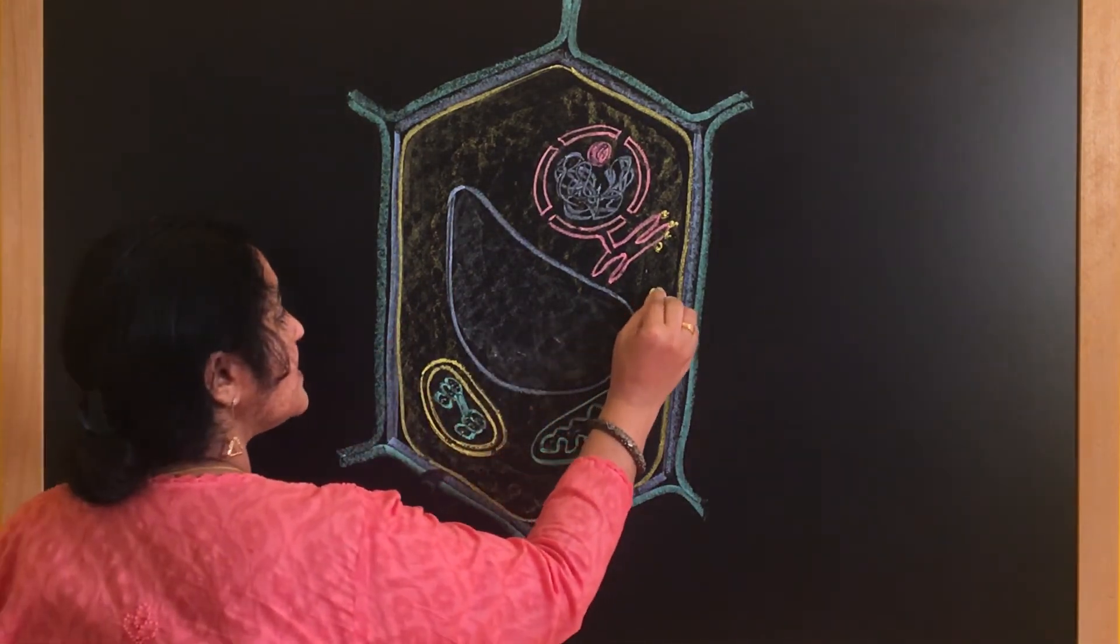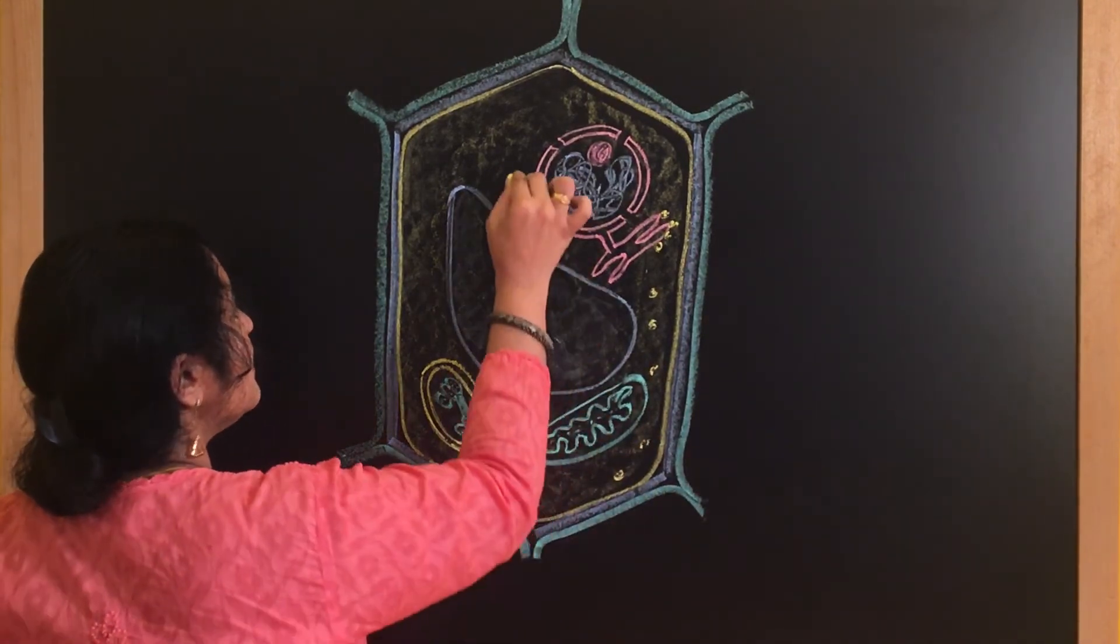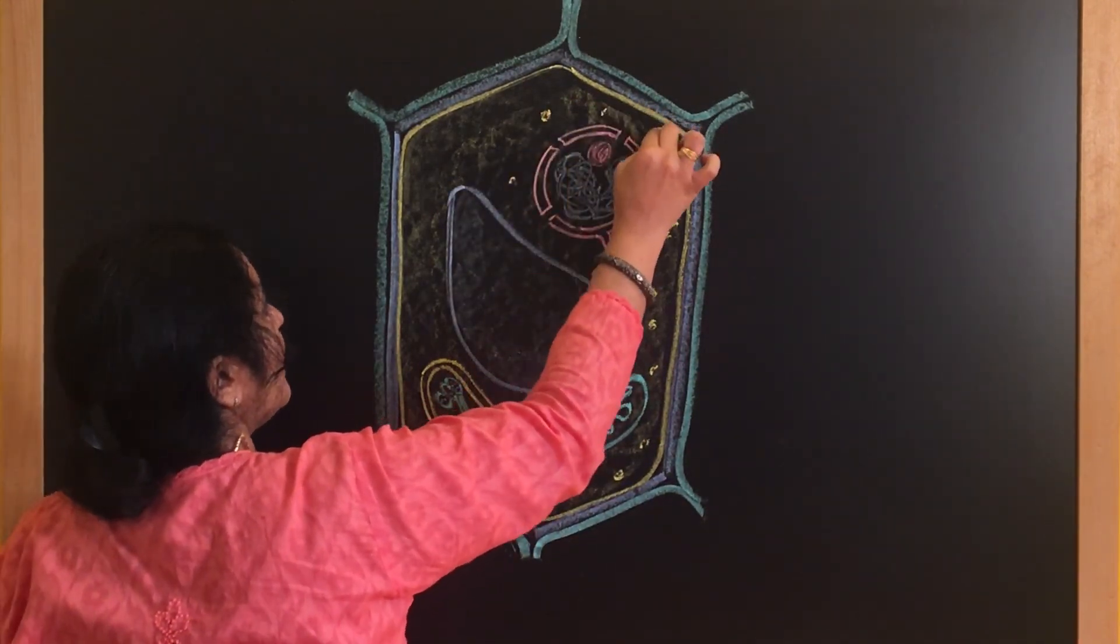Now these ribosomes can also be seen freely in the cytoplasm. They help in protein synthesis. So you can draw ribosomes.